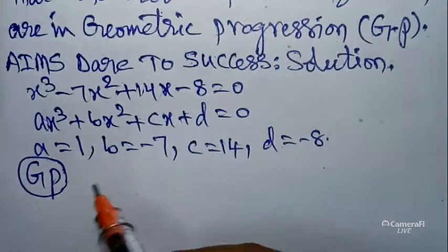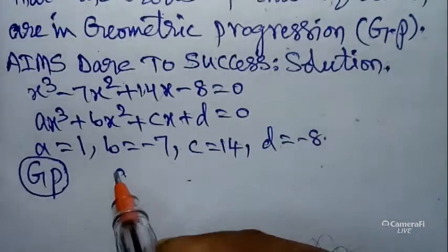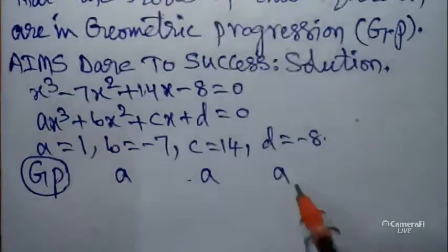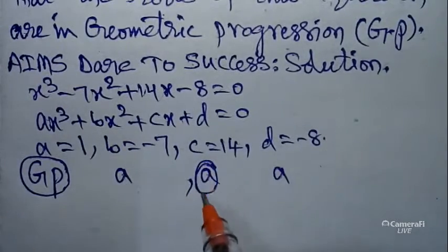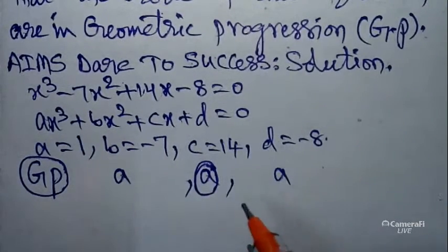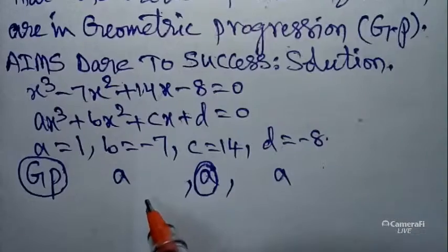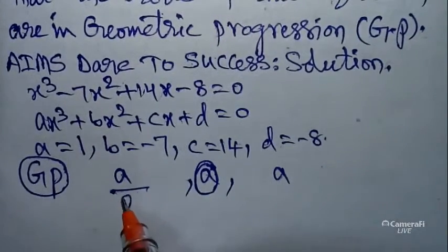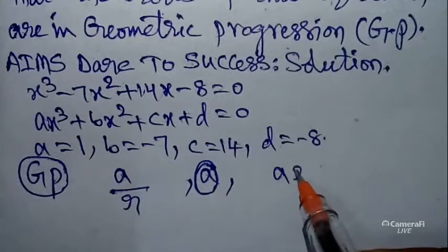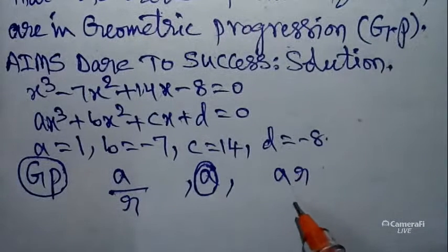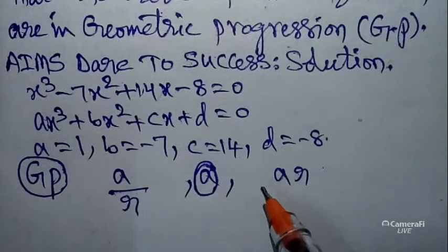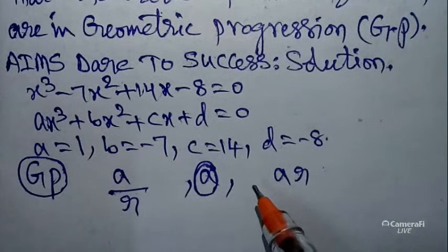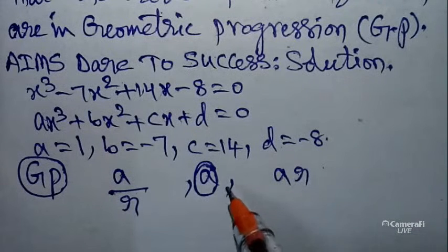The roots are in Geometric Progression. In GP, you can take three roots as: a/r (left of middle), a (middle — don't disturb), and a·r (right of middle), where r is the common ratio. These are the three roots in Geometric Progression.